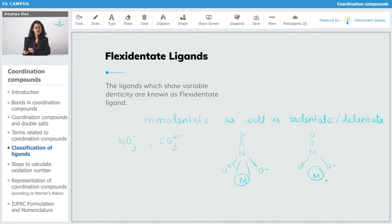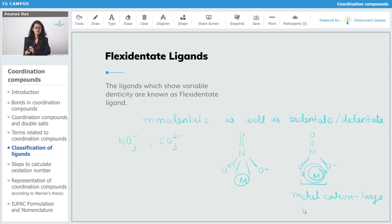But in the case of a larger cation, both of these bonds need not come much closer to the metal ion because the metal atom is already large enough that it can directly coordinate and form bonds with both of the oxygen atoms. So if the metal is large, the ligand will behave as bi-dentate — the metal cation is large, the ligand is going to show bi-dentate behavior.